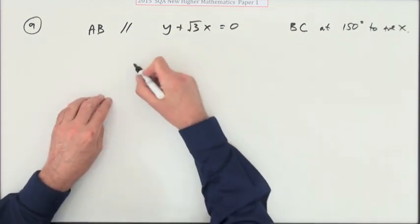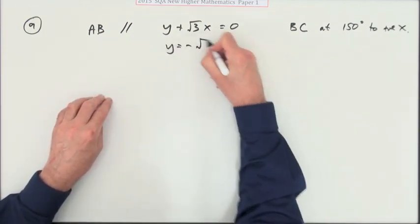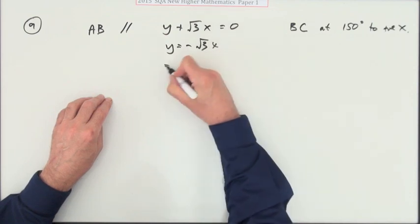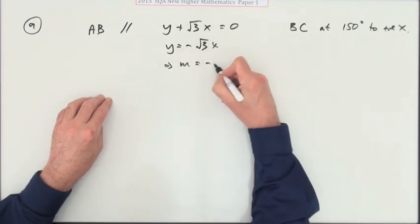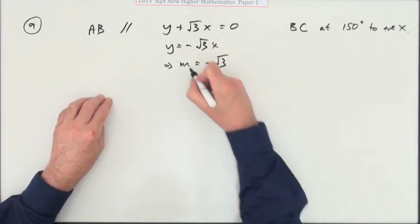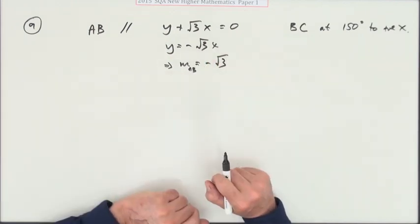Maybe we'll do it that way around. So what's the gradient of this? Rearrange it: y is negative √3x, so that means its gradient is negative √3. So that's the gradient of AB as well, since it's parallel to it.